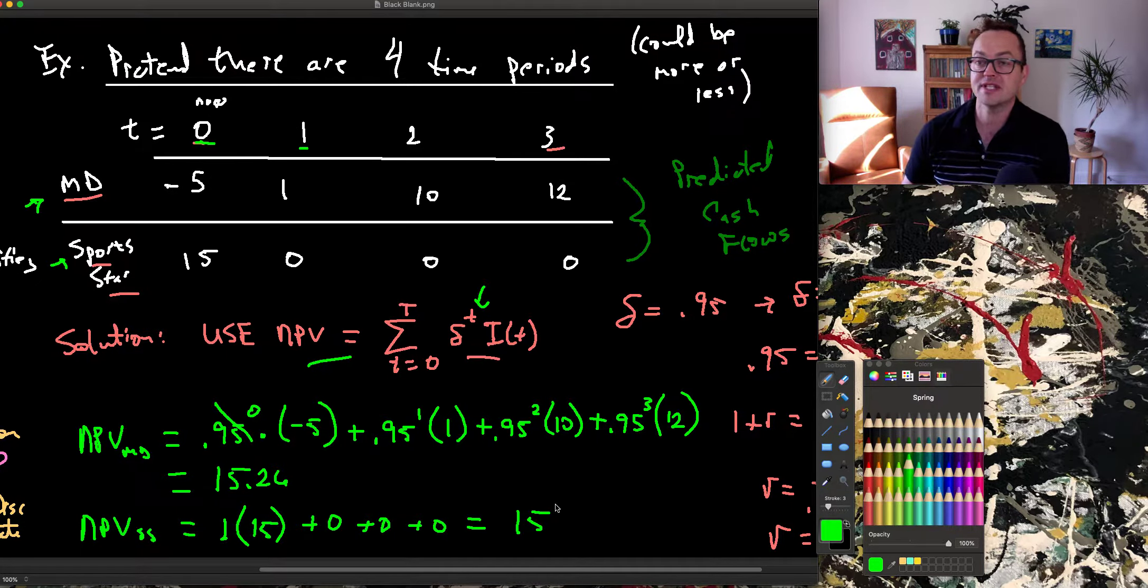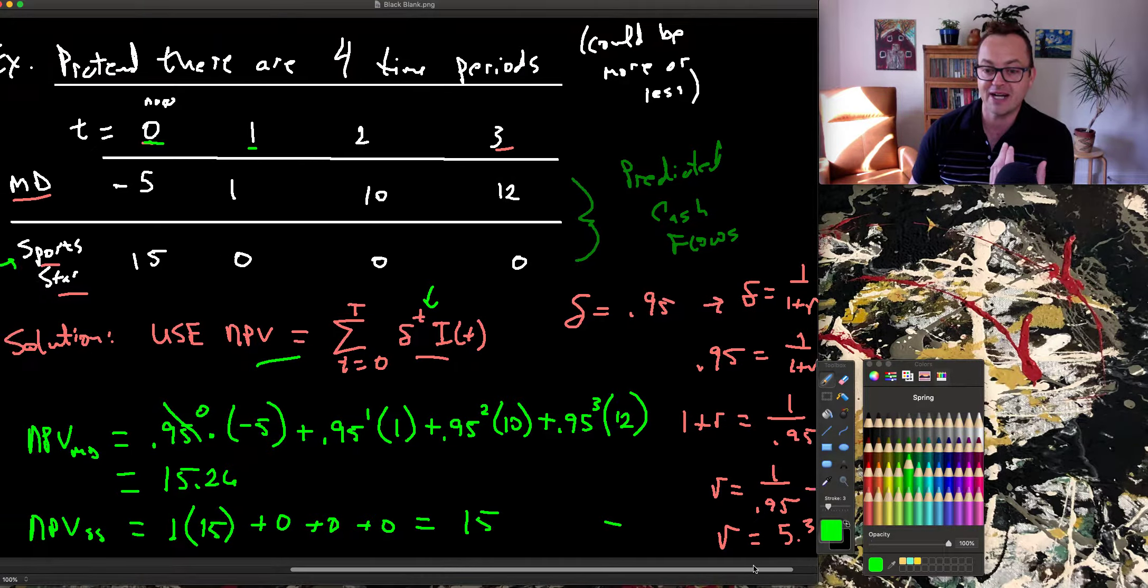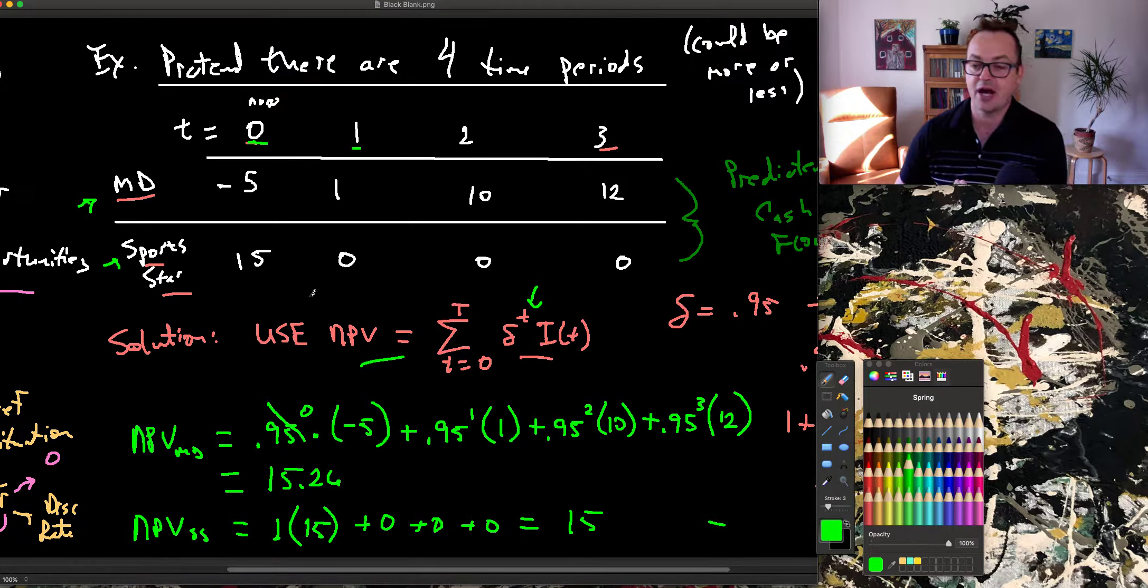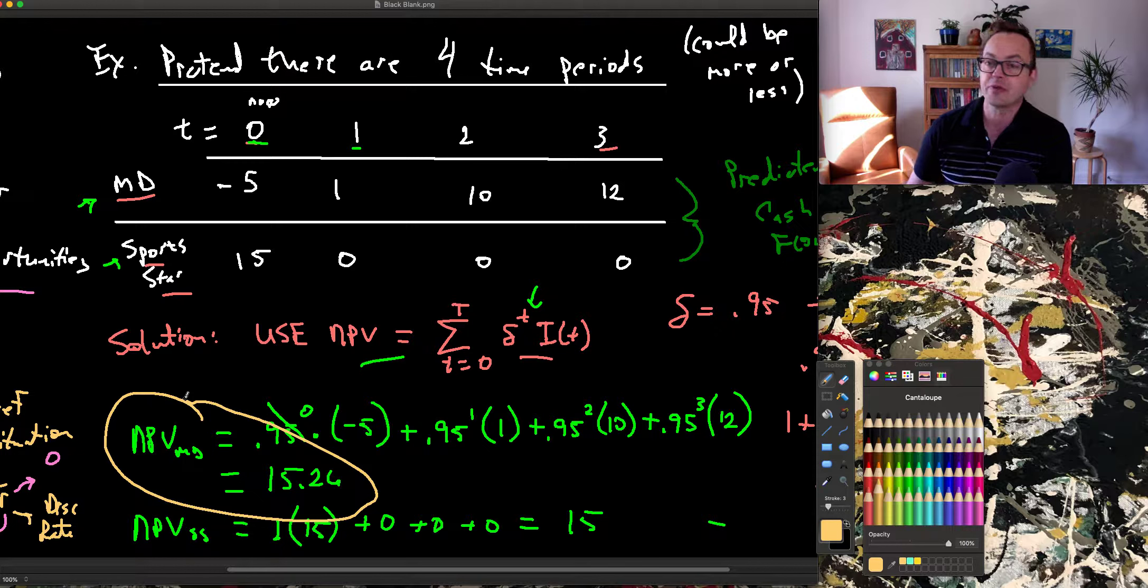So what has this done? At a discount factor of 0.95, which is a discount rate of 0.053, being a doctor just barely beats out being a sports star. So if everything else were equal, I would choose to be a doctor.